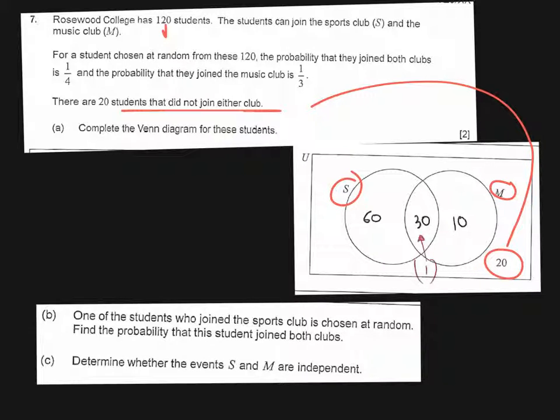For a student chosen at random from these 120, the probability that they join both clubs is a quarter. So to work out what goes in here we're just going to do a quarter times 120 which is going to give you 30.